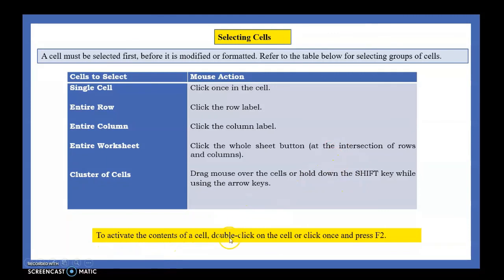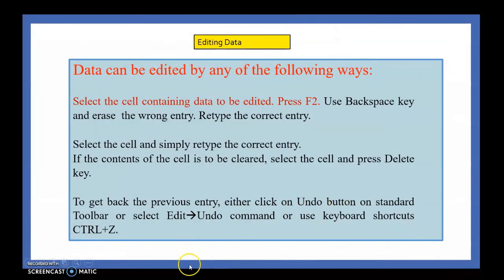To activate the content of a cell, either double-click the cell or click once and press F2. For editing, you can use the Backspace key, retype the entire entry, or use the Undo option. There are many keyboard shortcuts available. You can also simply retype the content. That way you can complete the editing.